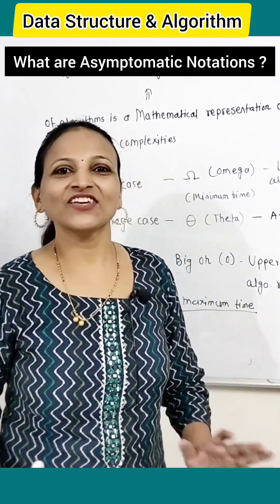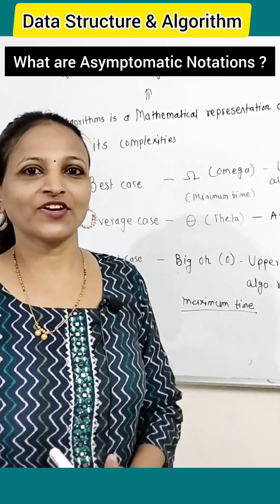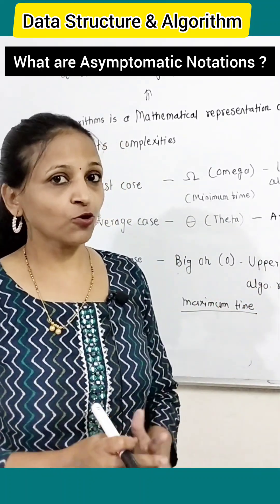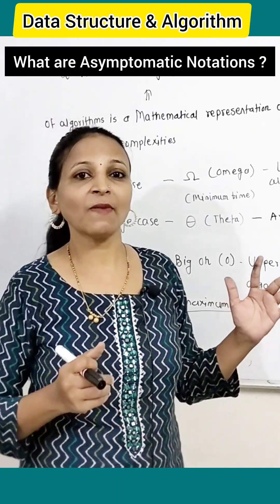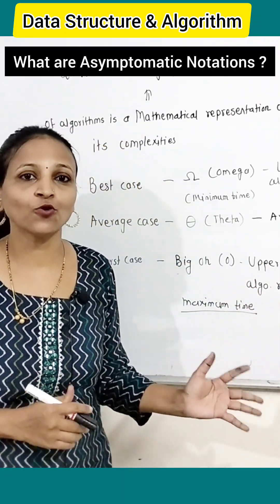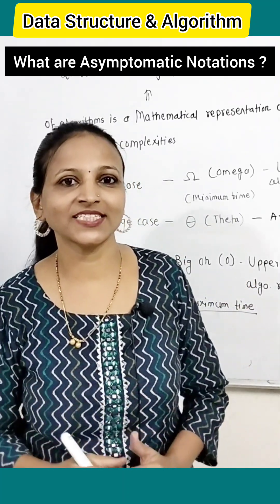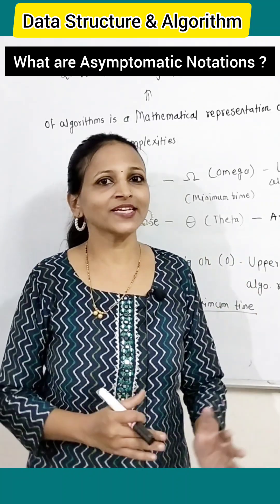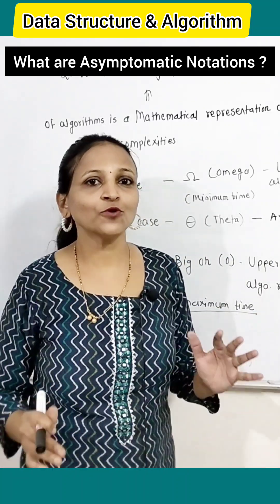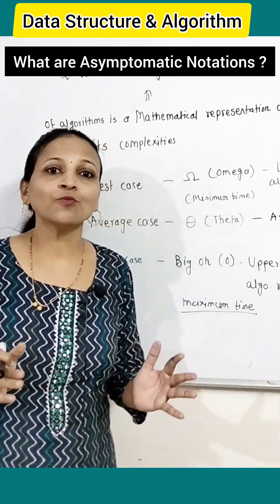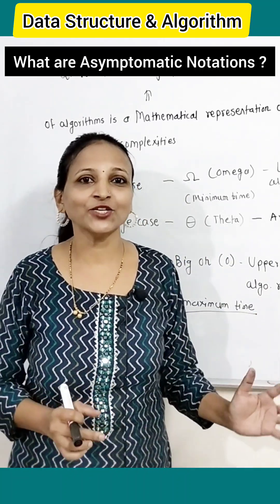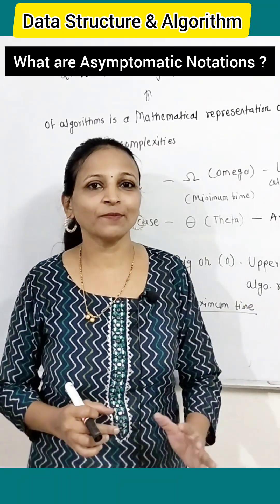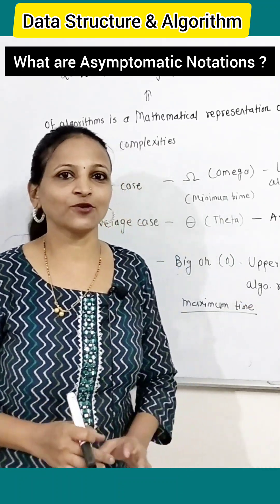Hello students, I am again here with one more important question. What are asymptotic notations? Asymptotic notations is a mathematical representation of algorithm's complexity. There are two types of complexities like time complexity and space complexity. To represent both complexities, we can use mathematical notations. Those are nothing but asymptotic notations.